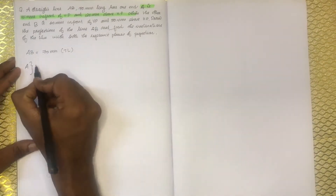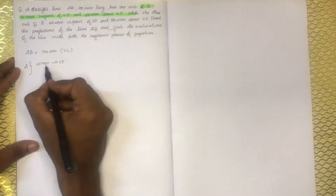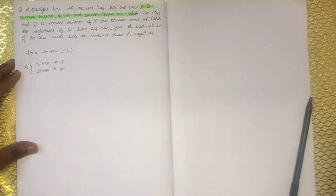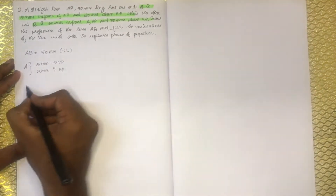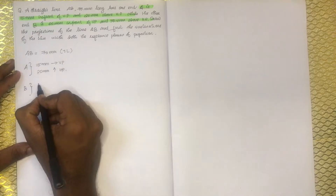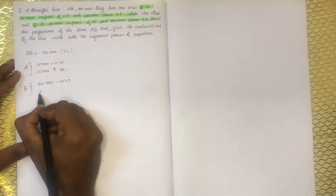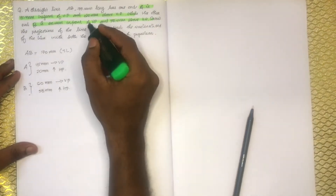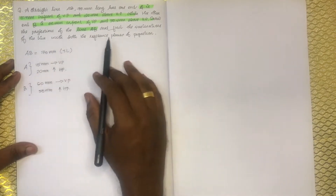A is a point. The other end B is 60mm in front of VP and 50mm above HP. B is a point. Then we can see AB — AB is a point. Find the inclination of the line with both the reference planes: plan and elevation.